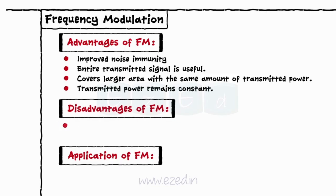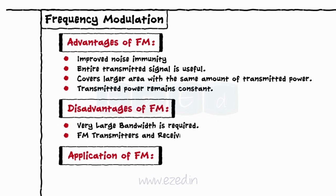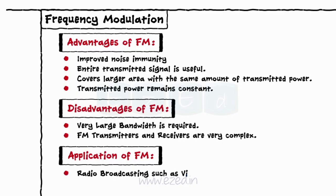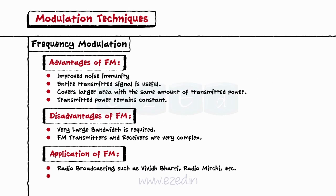Disadvantages: very large bandwidth is required, and FM transmitters and receivers are very complex. Applications of FM include radio broadcasting such as Vivid Bharati, Radio Mirchi, etc., and sound broadcasting in TV.